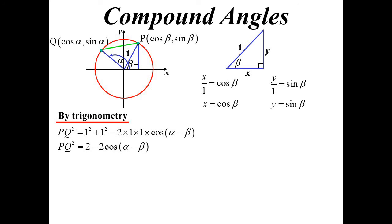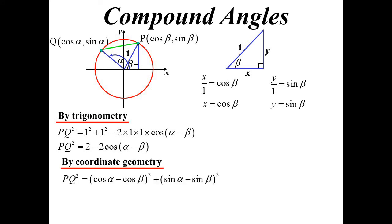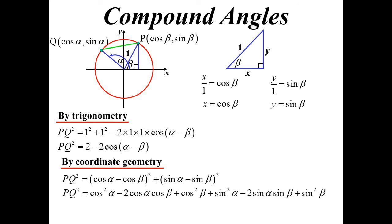That's one way to find PQ. Of course, I could also use coordinate geometry and the distance formula. PQ² would be the difference in x-values squared plus the difference in y-values squared. Expanding that all out, we notice some cos² plus sin² terms. We know from our trig identity that cos² + sin² = 1. So all of that tidies up to be 2 − 2cos α cos β − 2sin α sin β. But both expressions are equal to PQ².